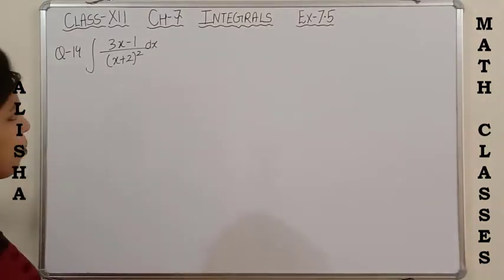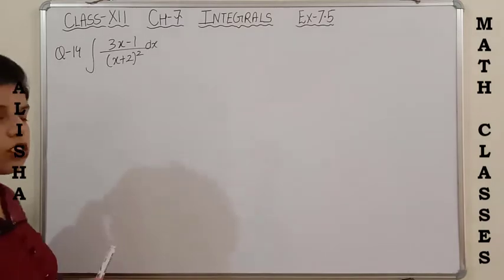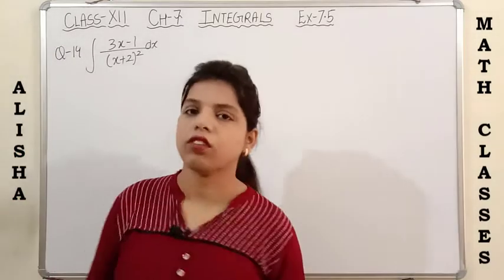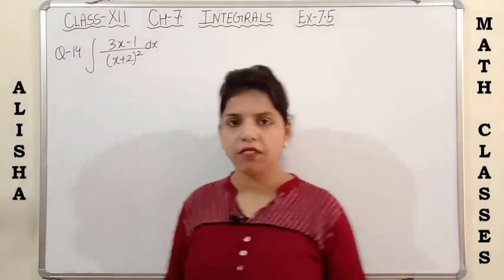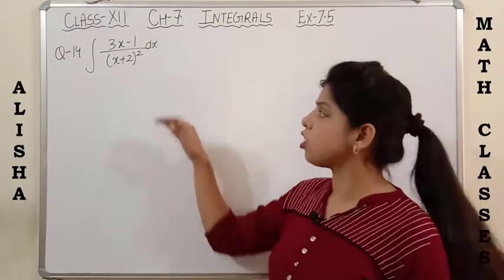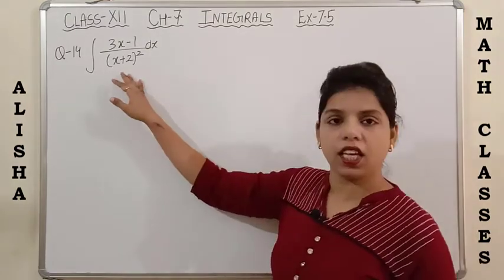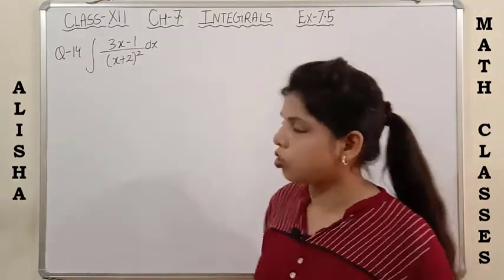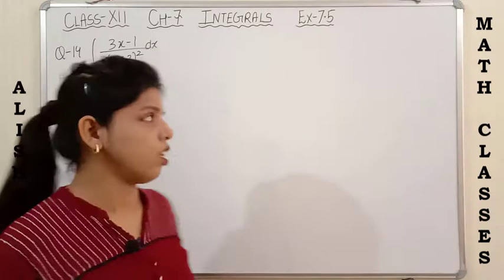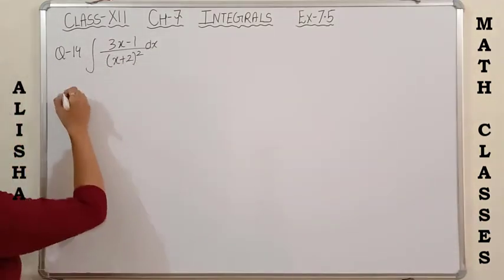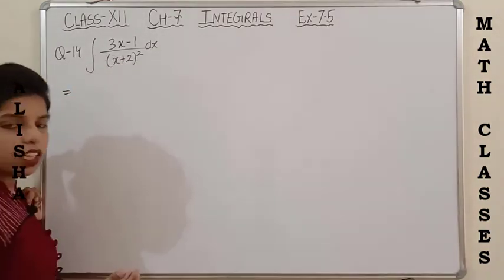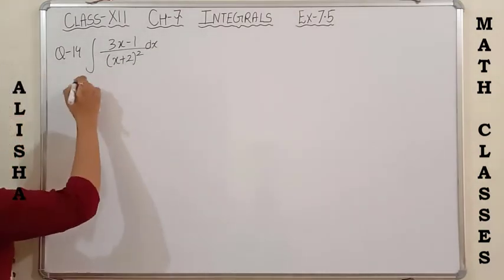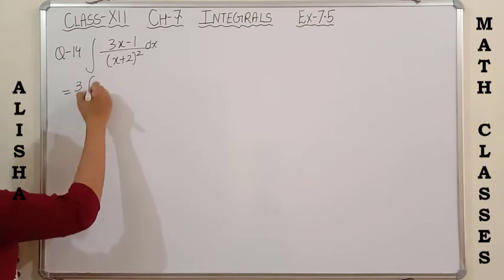Students, let's see question number 14: integration of (3x minus 1) upon (x plus 2) whole squared. In this question we have a linear factor in the denominator raised to a power. We can either use partial fractions or split the term directly.